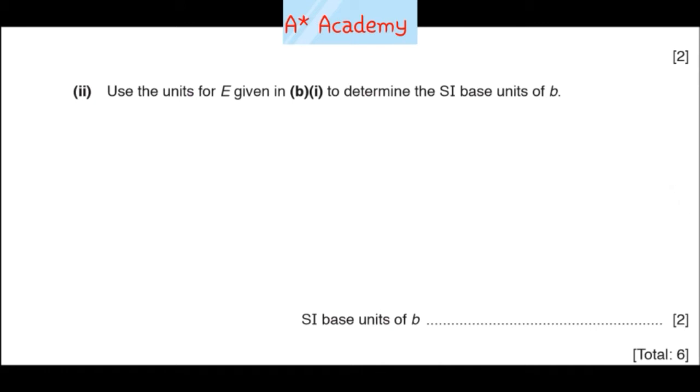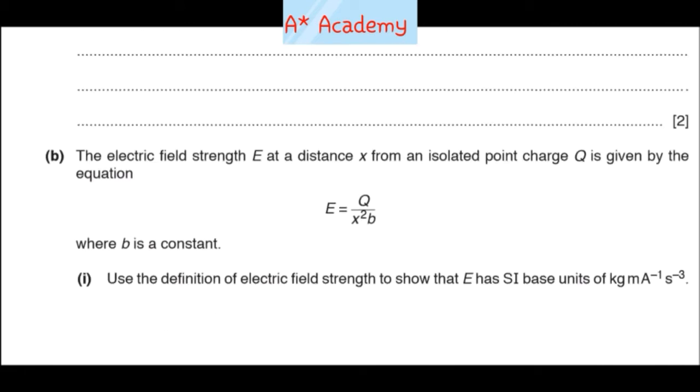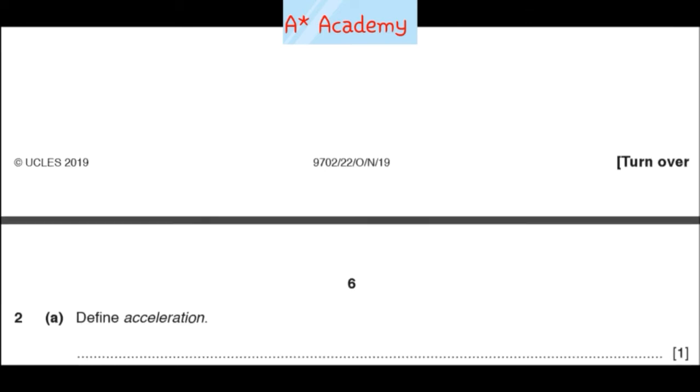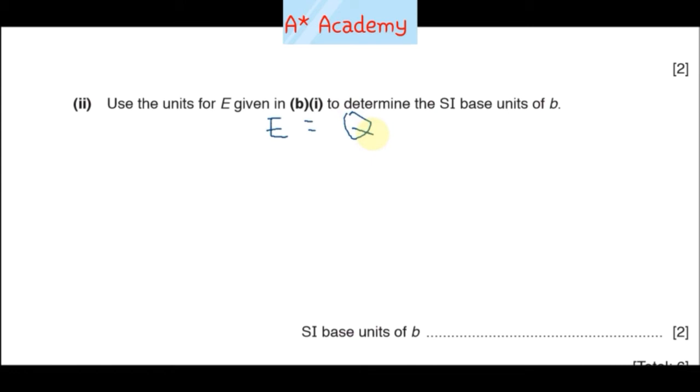Right, we are on to item 2 now. We are going to use the units of E to determine the SI base units of b. So we are going to make use of this equation here and these units that we have obtained. How are we going to do that? Well, this is how we are going to do it. We have been told that E is equal to Q divided by x squared b.